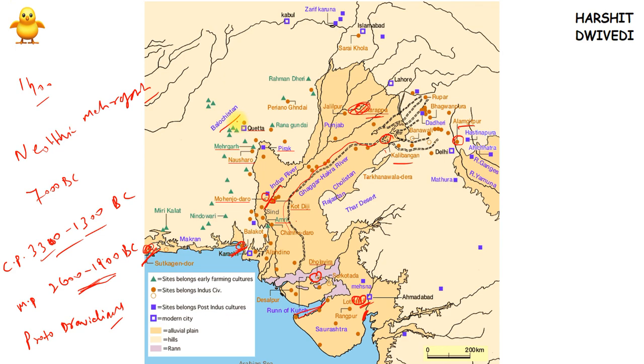Ropar is in Punjab and was excavated by Y.D. Sharma. Chanudaro is located 130 kilometers south of Mohenjo-daro on the Sindh River. A lot of figurines, toys, and bone implements have been found in Chanudaro.